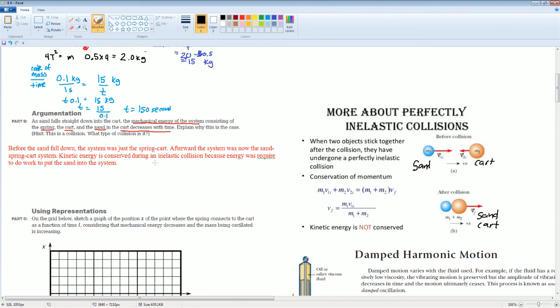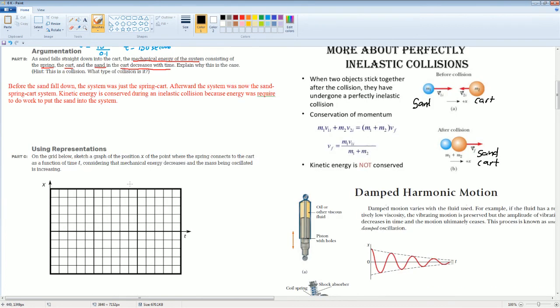So the motion of this should look something like this: goes up, down—here's one cycle. Then the second time the amplitude gets smaller. Third time the amplitude gets smaller. The amplitude should get smaller over time.